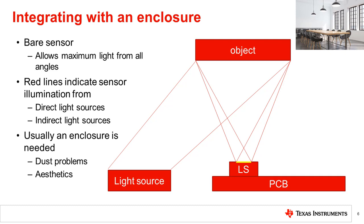This diagram is also applicable when sensing indirect lighting from reflections off environmental objects, as shown. For example, both indoor and outdoor light sources will illuminate objects in the room, such as walls, floor, and furniture. All of these objects reflect light and can be viewed as being made up of tiny point sources as well. As most systems require an enclosure, a bare sensor is usually not practical. A bare sensor is exposed to outside contaminants such as dust, and aesthetically, it is usually desired to hide the sensor and internal components as much as possible.